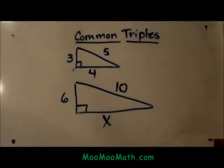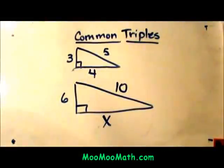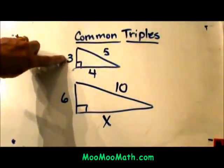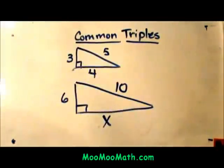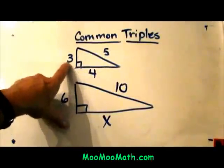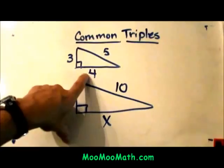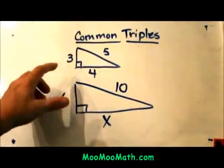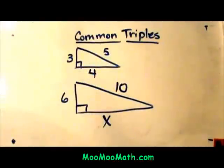Hi and welcome to Moo Moo Math. Today we're going to look at common triples that are associated with the Pythagorean theorem. Here is a common triple: 3, 4, 5. What makes it a common triple is it works in the Pythagorean theorem. 3 squared plus 4 squared equals 5 squared. So we have the whole numbers 3, 4, and 5 that are a common triple in the Pythagorean theorem.